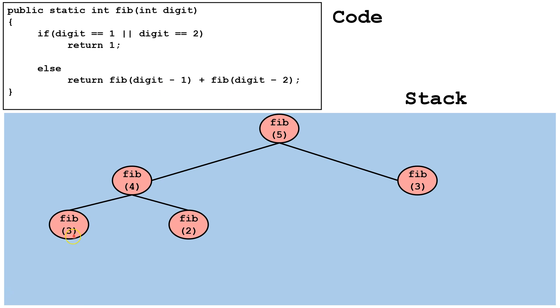Next, we make a call to Fib, and passing it the value 3. It's not equal to 1 or 2, so we make a call to Fib 2, and then Fib 1.